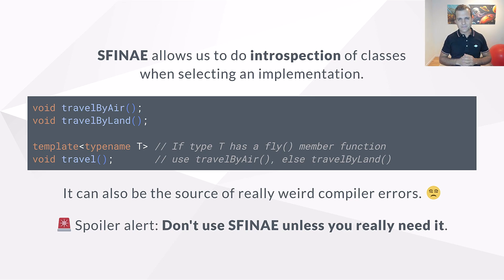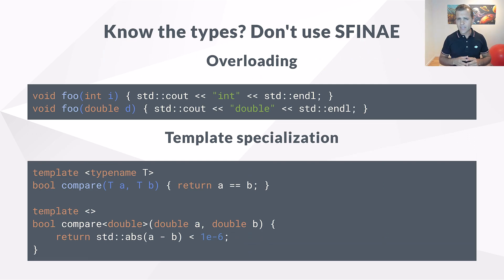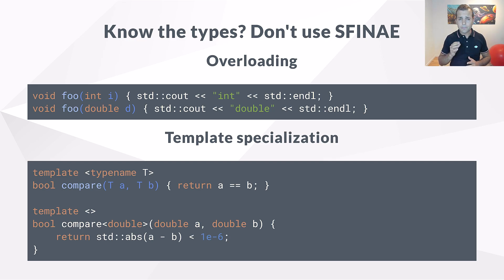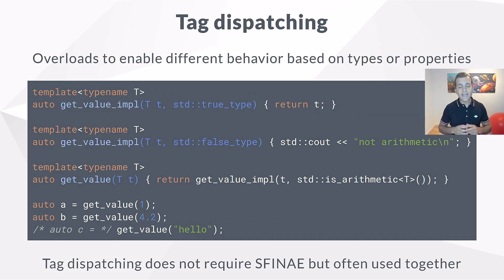Let's check out the alternatives. Do you know exactly what types you're going to use? In other words, can you select a behavior based on which type it is instead of what the type can do? Then usually you can go for overloading — super simple, easy to understand. Is overloading not enough and you need templates? Then specialize them. Don't use SFINAE if the behavior you're going to choose between depends on specific types rather than characteristics.